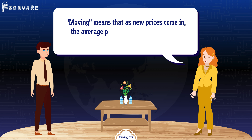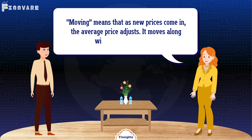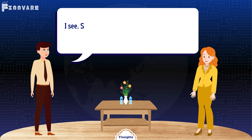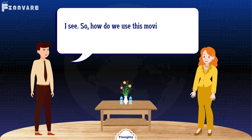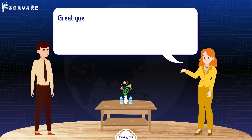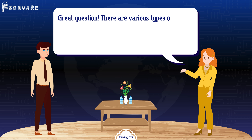Got it. So what does moving mean in this context? Moving means that as new prices come in, the average price adjusts — it moves along with the price changes. I see, so how do we use this moving average in technical analysis?